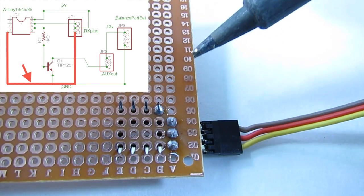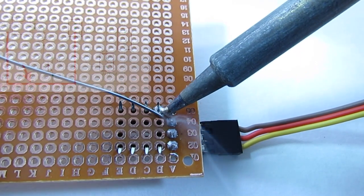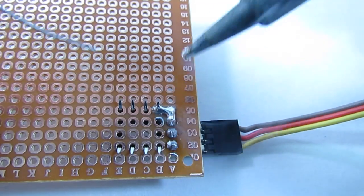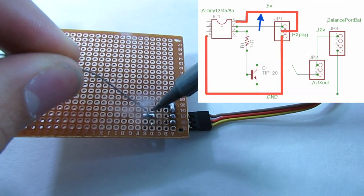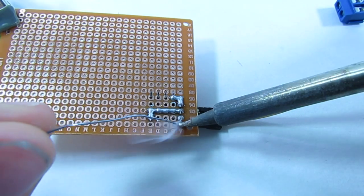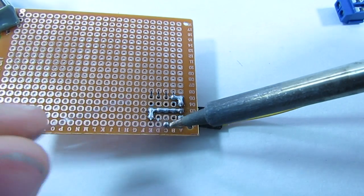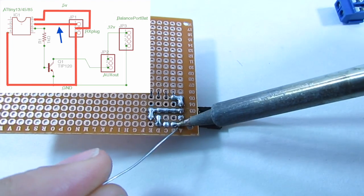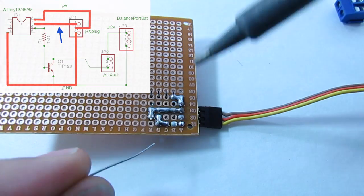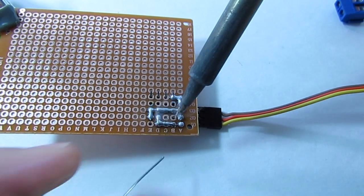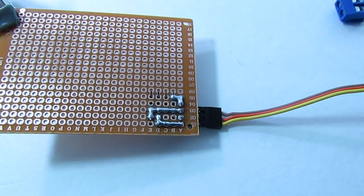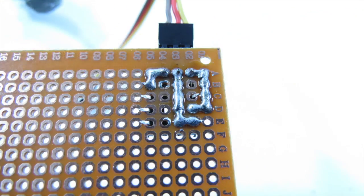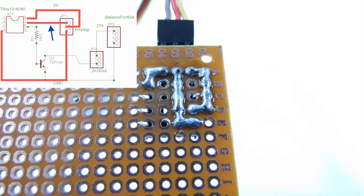Create a solder bridge from ground to pin 4 on the ATtiny. Remember that everything is upside down while you're soldering. Make a solder bridge from pin 8 to the middle pin on the pin header. Make another solder bridge from the signal wire to pin 7 on the ATtiny. Here's what everything should look like.